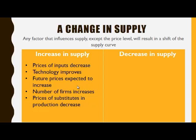When the price of substitutes in production decreases, this will result in an increase in supply. For example, if mutton and beef are substitutes in production and the price of mutton decreases, the quantity supplied of mutton will also decrease. If beef is a substitute in production, the quantity supplied of beef will increase due to the decrease in the price of mutton.